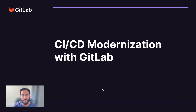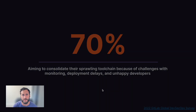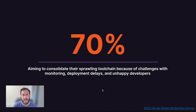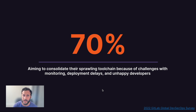Now, before diving in, I found an interesting survey result. In a recent GitLab DevSecOps survey, 70% of those surveyed are aiming to consolidate their sprawling tool chain because of challenges with either monitoring, deployment delays, or unhappy developers.